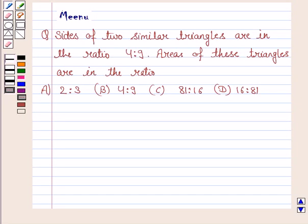Hello and welcome to the session. Let's work out the following problem. It says sides of two similar triangles are in the ratio 4 is to 9. Areas of these triangles are in the ratio.